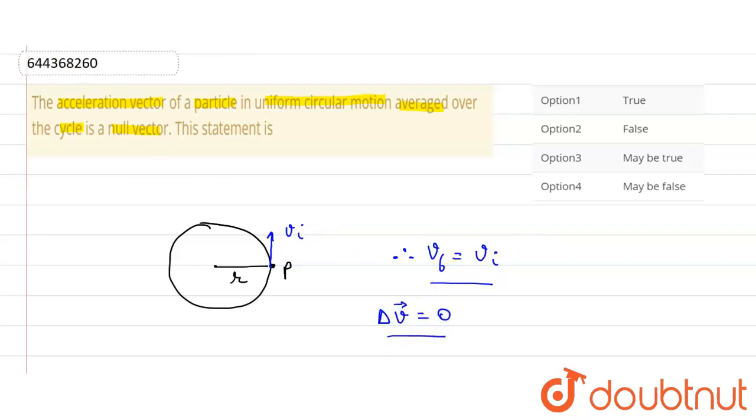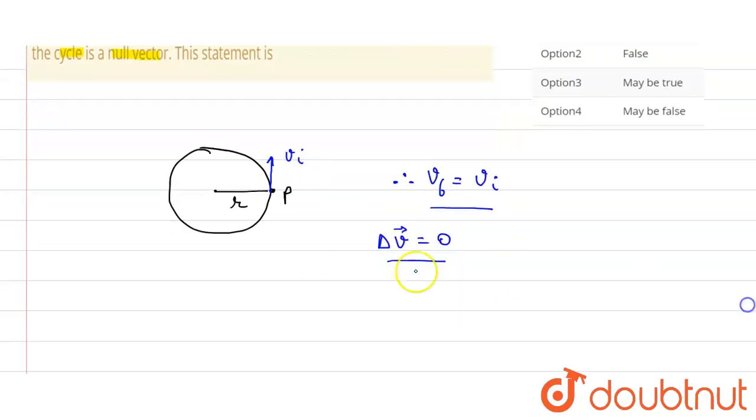Because vf minus vi will also be equal to zero. Okay, so now let us calculate the average acceleration. So the average acceleration will be equal to net change in velocity upon total time.